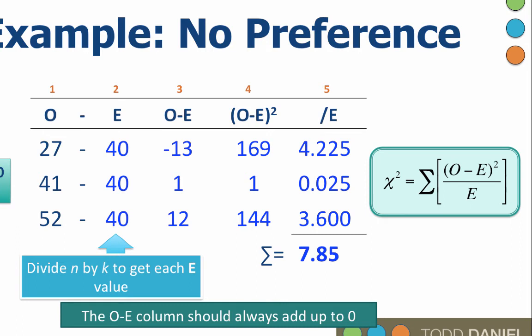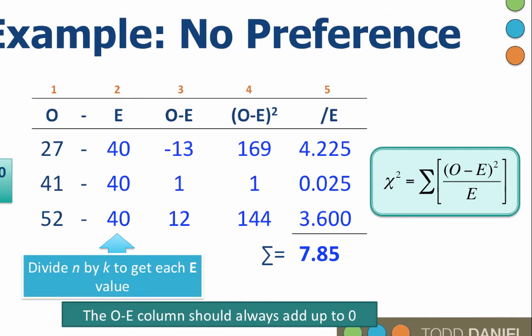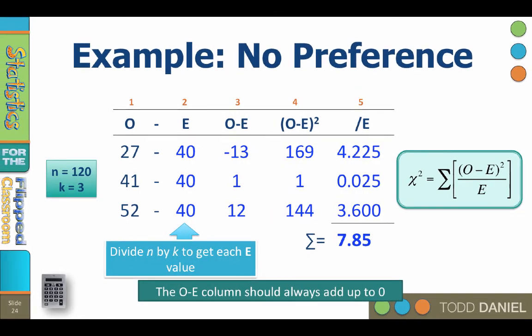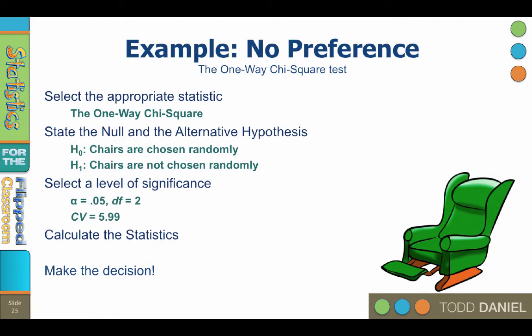Now the last step is to add up the fifth column. Those values add up to 7.85. That is our chi-square statistic. Now let's go back to our five steps of hypothesis testing. Step four, calculate the statistics. The total chi-square was 7.85.